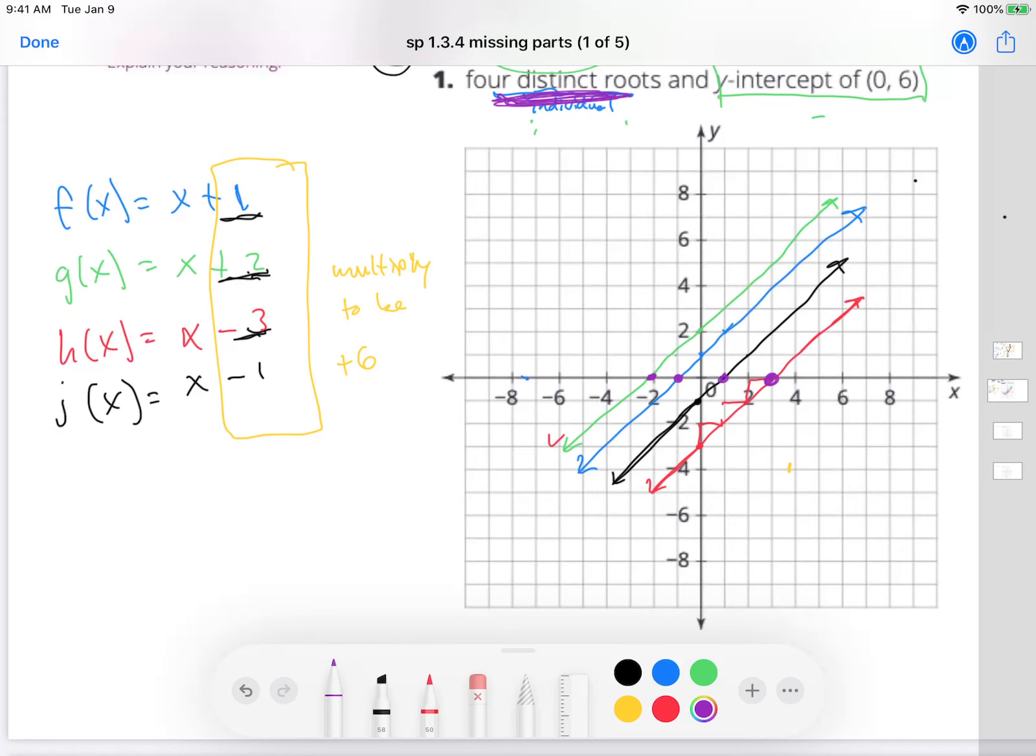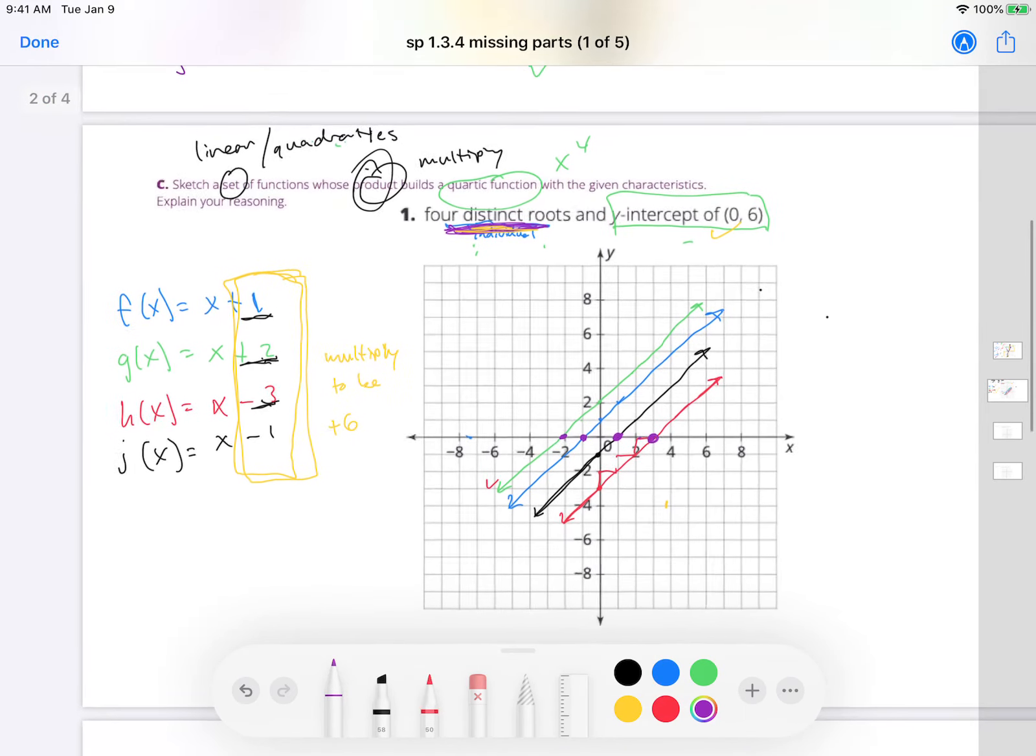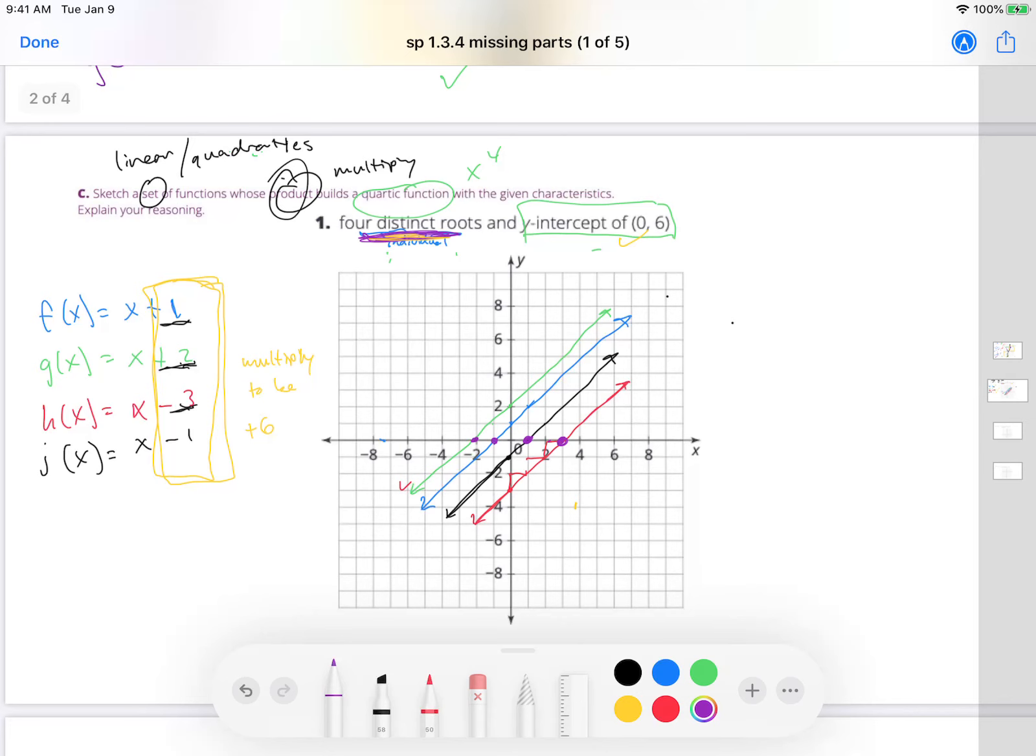So again, we met our criterion. If you multiply here in this yellow box, 1 times 2 times negative 3 times negative 1 equals a positive 6. Got that done. And then the four distinct roots are these four purple dots. And that's how you build a quartic function with those given characteristics. See you guys.